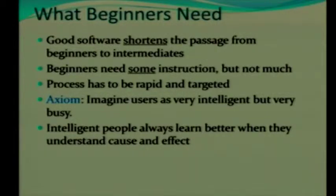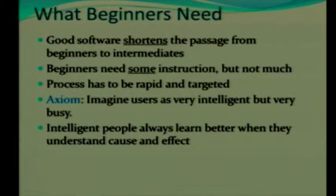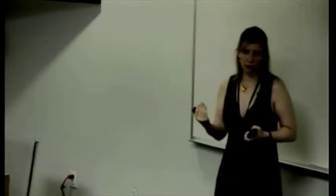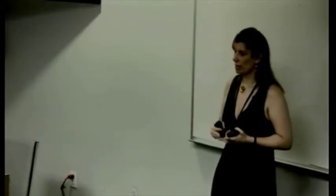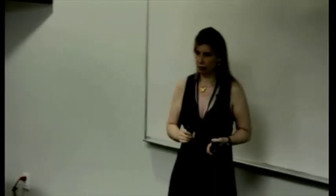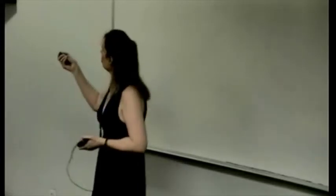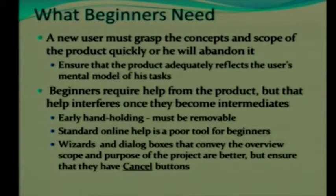Here's another axiom: imagine users as very intelligent, but very busy. Intelligent people always learn better when they understand cause and effect. So they need to understand what the purpose of the product is, as well as what happens when they perform a given action. New users need to grasp the concepts and scope of a product quickly, or that user will abandon it.